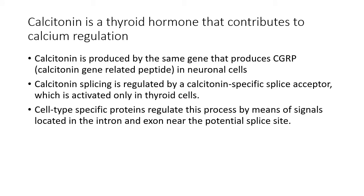Our first example is going to be calcitonin, which is a thyroid hormone contributing to calcium regulation. This is actually produced ultimately by the same gene that produces CGRP, also a hormone, but this time in neuronal cells rather than in the thyroid. Calcitonin splicing is regulated by a calcitonin-specific splice acceptor, which is activated only in thyroid cells.